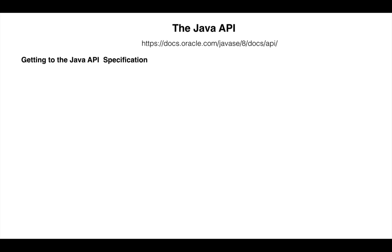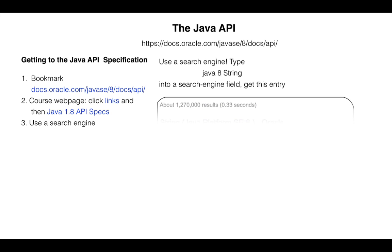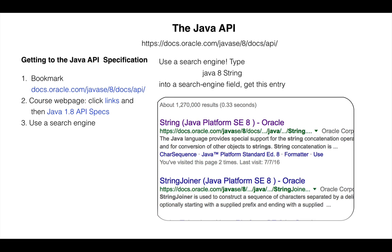You will be looking often at specifications of classes. You'll want to know how to get to them easily and quickly. There are at least three easy ways to do it: bookmark the URL, get to it from the course web page, and Google it. The third way is often the easiest to use — just use Google or some search engine; it takes a few seconds. For example, to get to the Java spec for class String, type the following into a search engine window: "java 8 string". Then click on the most appropriate link that the search engine gives you. When we do this using Google, the first link that Google gives us is the appropriate one. Just click it.